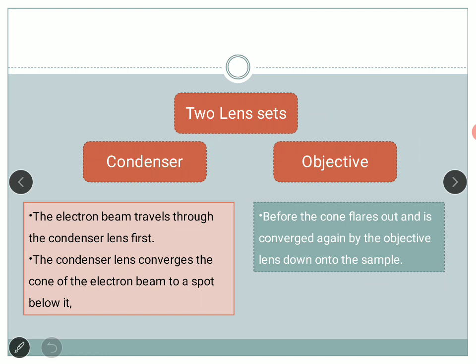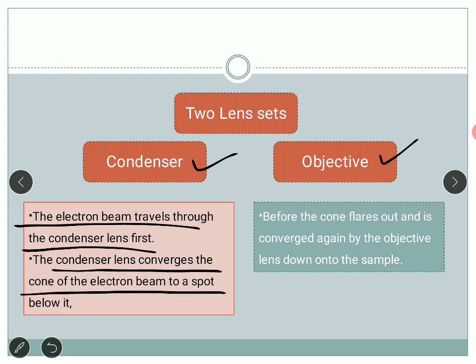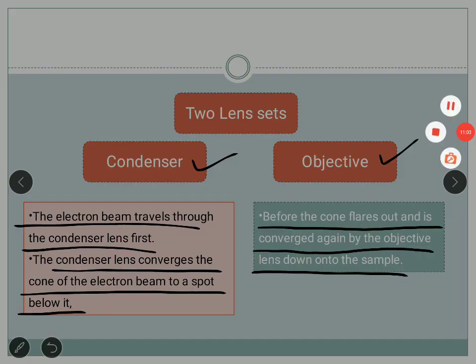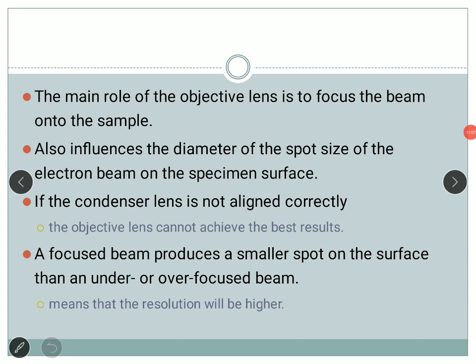There are two lens sets: the condenser lens and the objective lens, each with a specific purpose. The electron beam travels through the condenser lens first, which converges the cone of the electron beam to a spot below it. The objective lens then re-converges the beam — before the cone flares out again — down onto the sample. The main role of the objective lens is to focus the beam onto the sample.